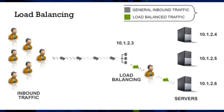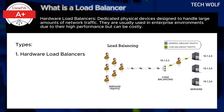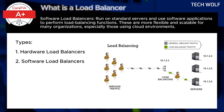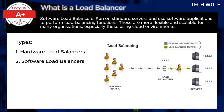Here are the types of load balancers. Hardware load balancers are dedicated physical devices designed to handle large amounts of network traffic. They are usually used in enterprise environments due to their high performance but can be costly. Software load balancers run on standard servers and use software applications to perform load balancing functions. These are more flexible and scalable for many organizations, especially those using cloud environments.